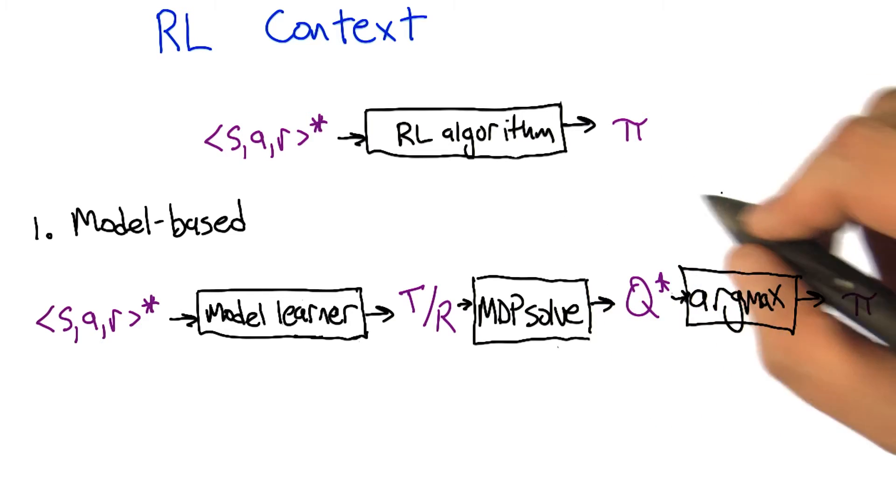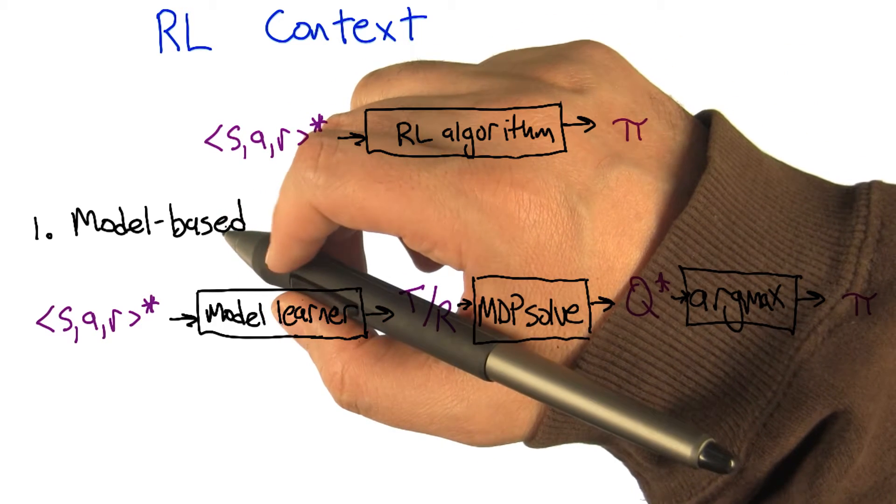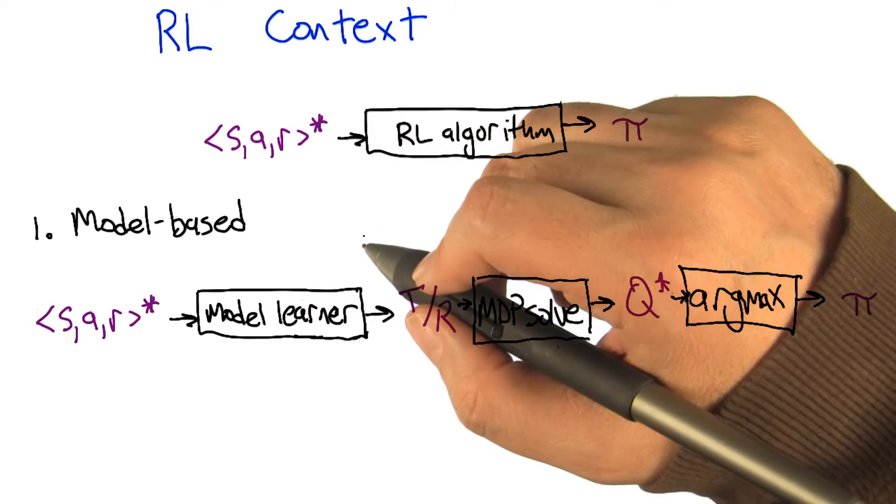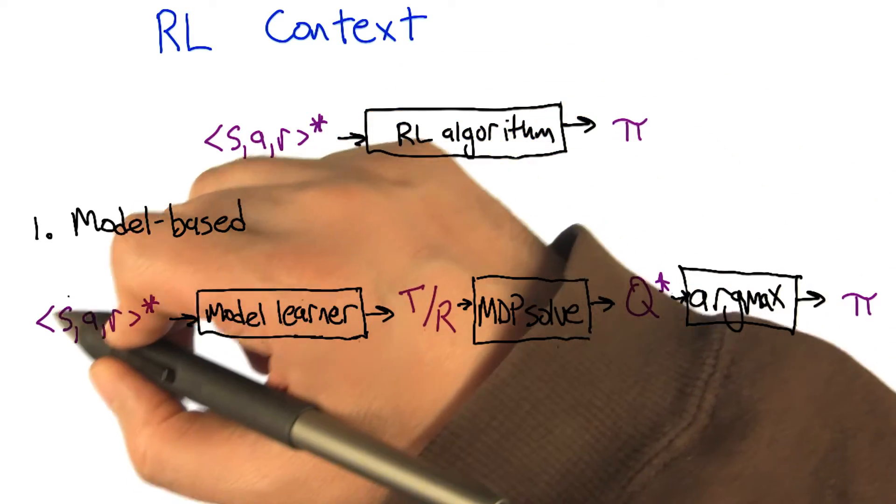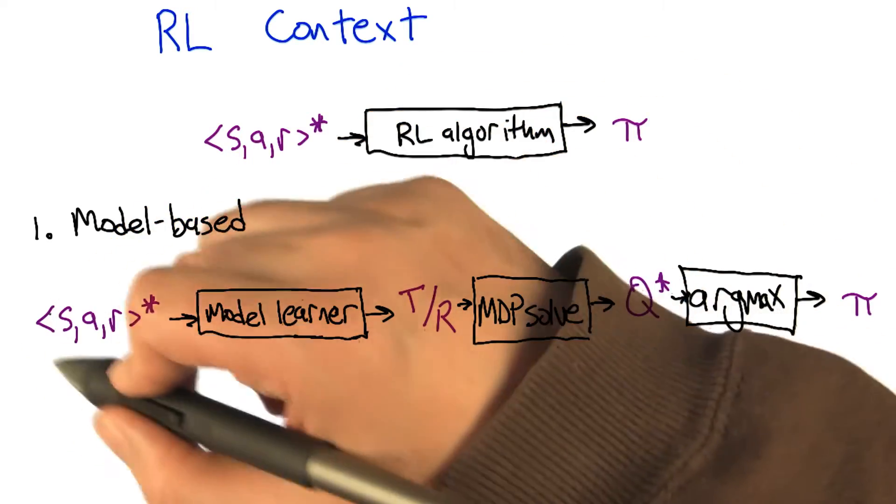So the way I like to think about it is there's three main families of reinforcement learning algorithms. The one that's most like what we've talked about so far is what we could call model-based reinforcement learning algorithm.